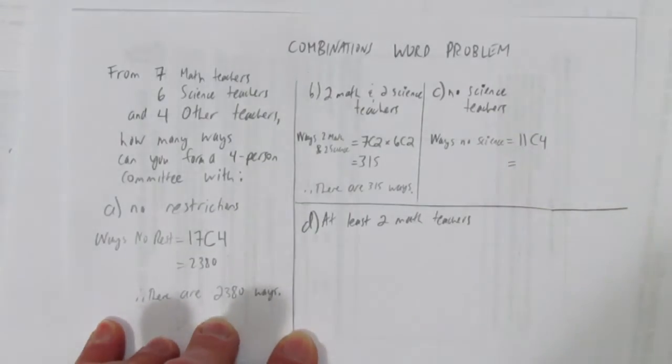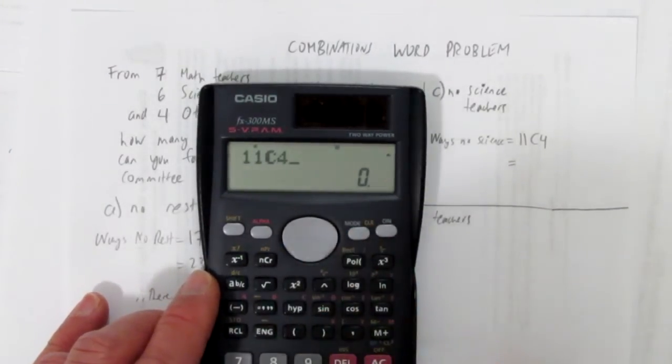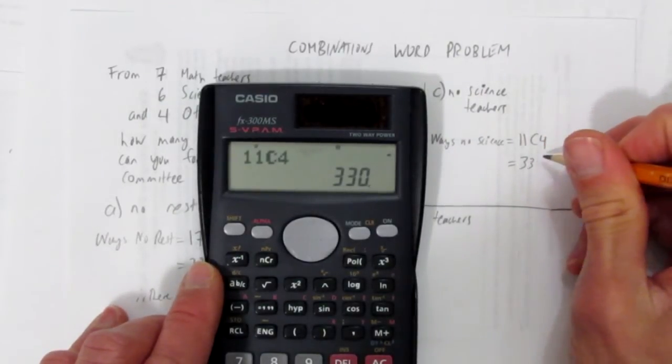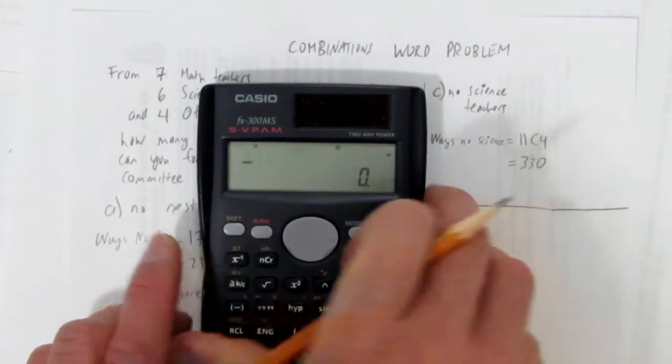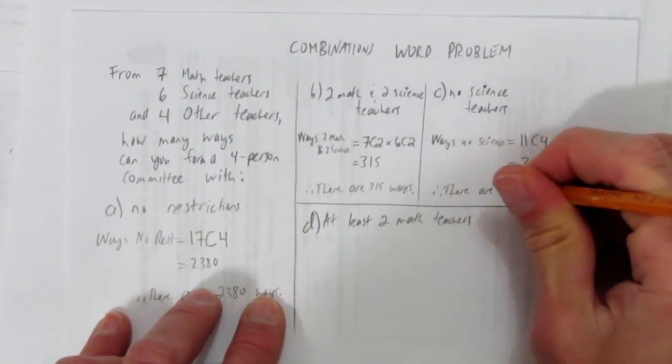So with no science teachers, it's just eleven choose four, which the calculator tells me is 330. In this situation, there are 330 ways.